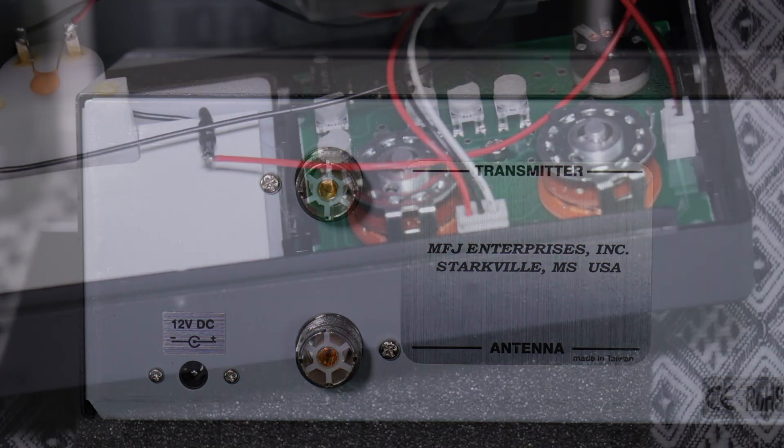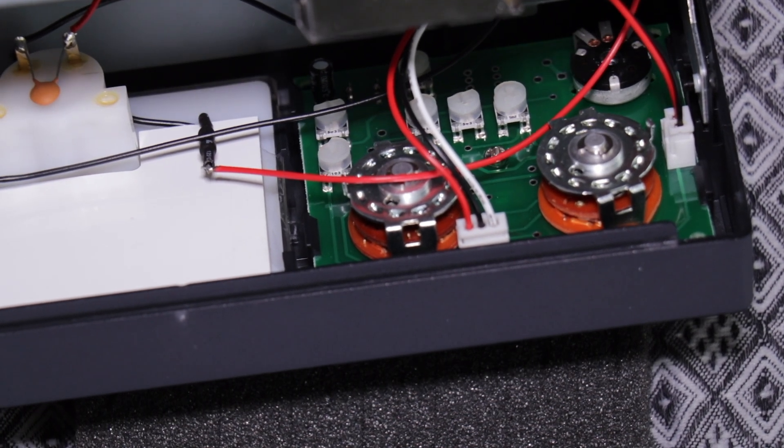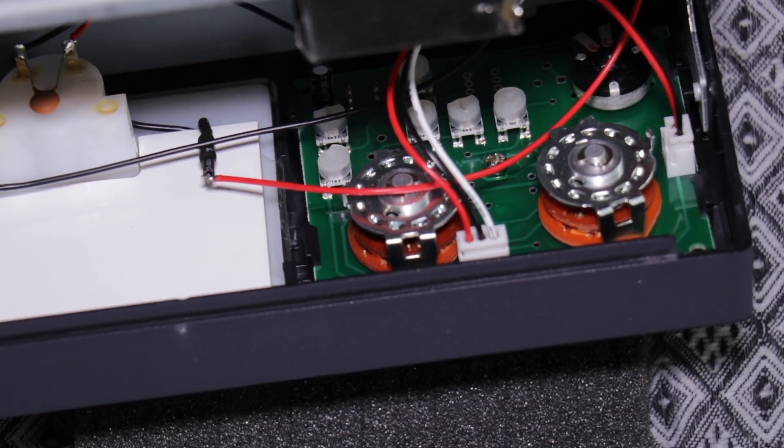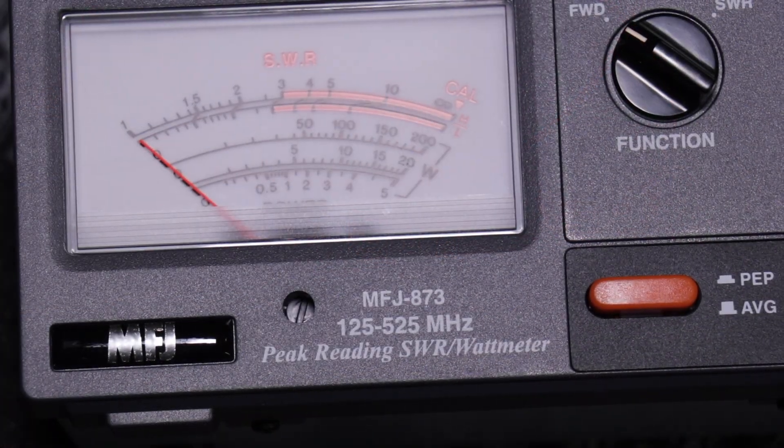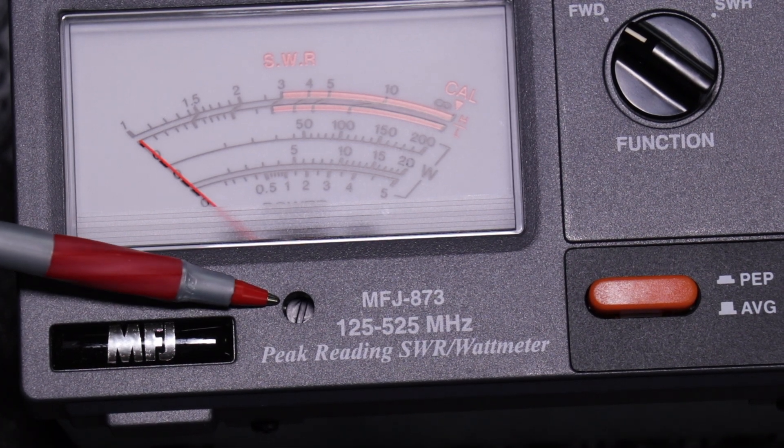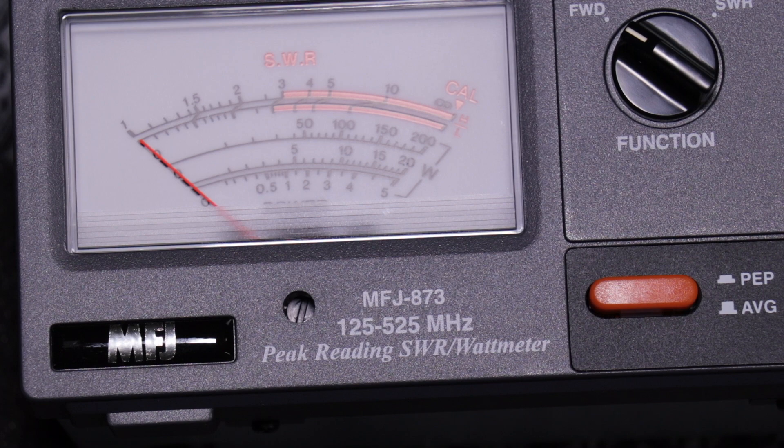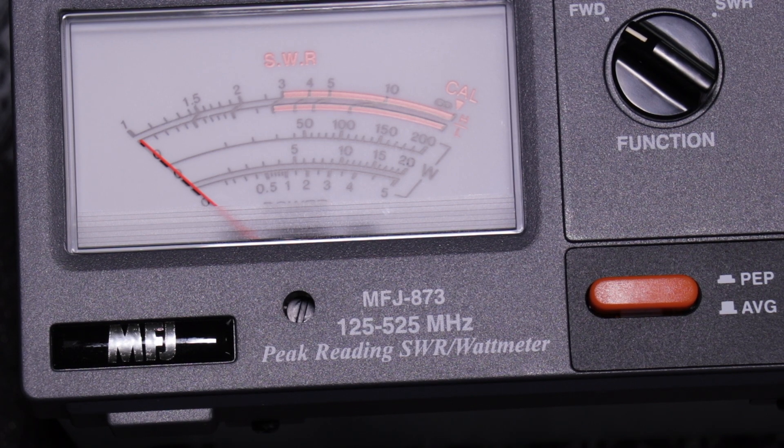When you look inside the 873 it has another six trim pots. The owner's manual does not tell you how to calibrate this but there is an adjustment screw right here below the meter. You'll probably call MFJ headquarters and have someone explain how to do it if it needs to be done.